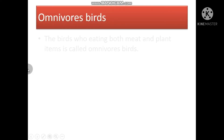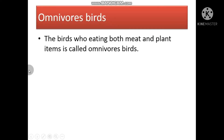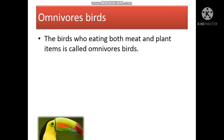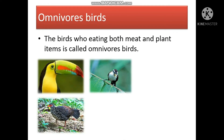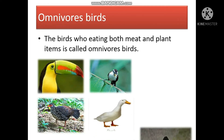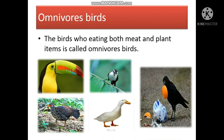Omnivore birds. The birds who eat both meat and plant items are called omnivore birds. These are the birds who eat both of them.